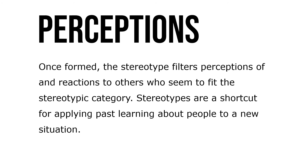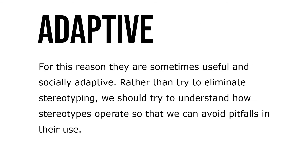Once formed, the stereotype filters perceptions and reactions to others who seem to fit the stereotypic category. Stereotypes are a shortcut for applying past learning about people to a new situation. For this reason, they're sometimes useful and socially adaptive. Rather than try to eliminate stereotyping, we should try to understand how stereotypes operate so that we can avoid pitfalls in their use.